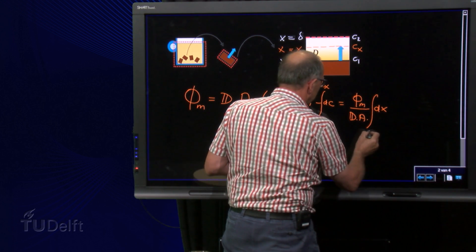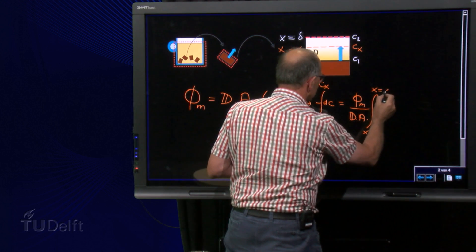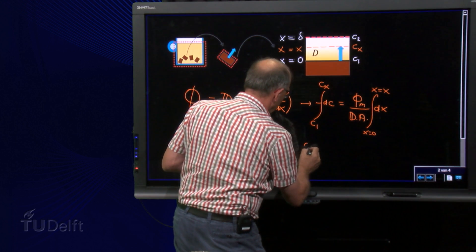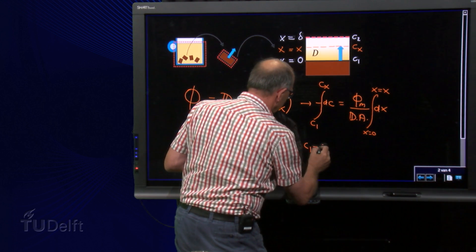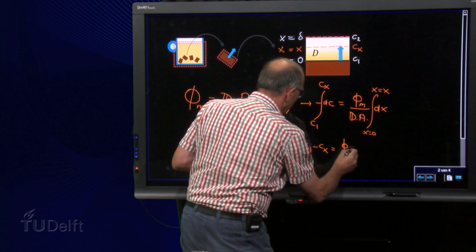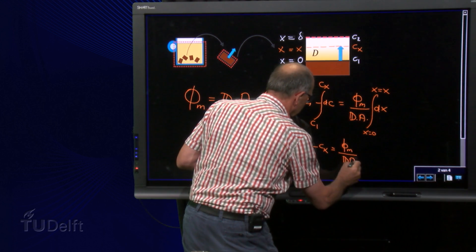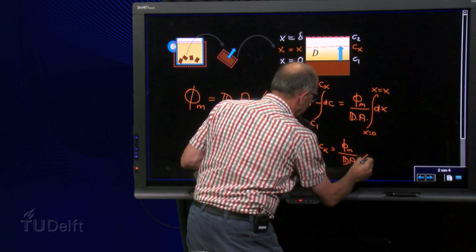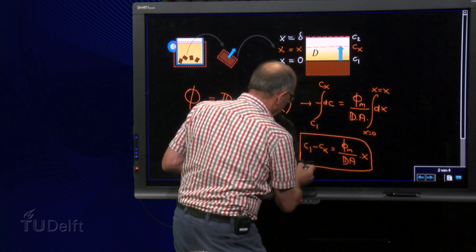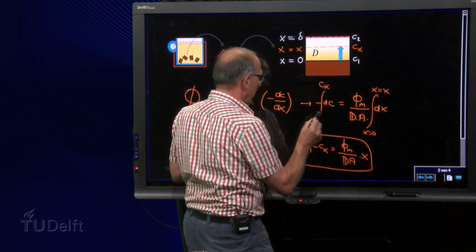and we do a similar at the other side, x equals 0 and x equals x, we can derive the concentration profile now by saying C1 minus Cx is equal to phi m divided by the diffusion coefficient and the surface area multiplied by x. Now we see that we have here a linear concentration profile in the layer between C1 and C2.